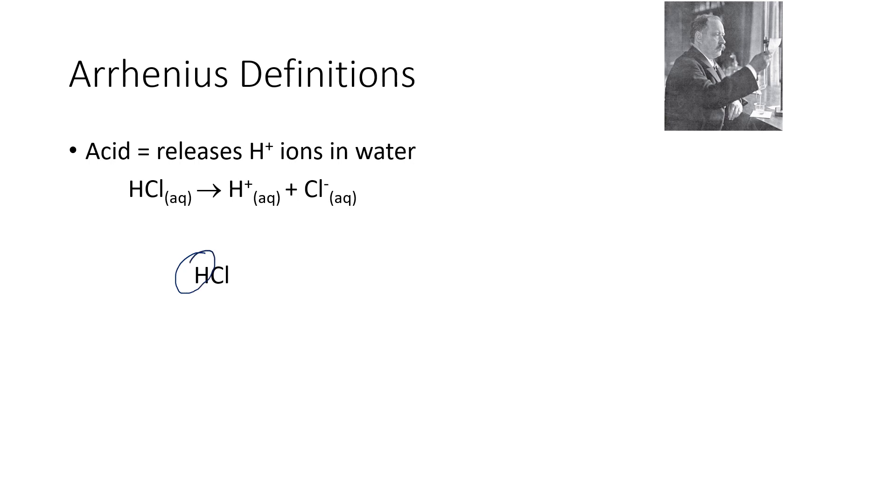Some other examples of Arrhenius acids might be H3PO4 or phosphoric acid, and those hydrogen ions that will ionize are all listed right at the beginning. Here's another Arrhenius acid, acetic acid, and the hydrogen ion that will come off is listed right there at the front.